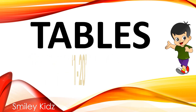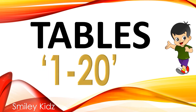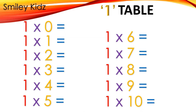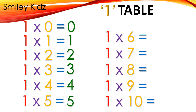Table 1: 1×0=0, 1×1=1, 1×2=2, 1×3=3, 1×4=4, 1×5=5, 1×6=6, 1×7=7, 1×8=8.